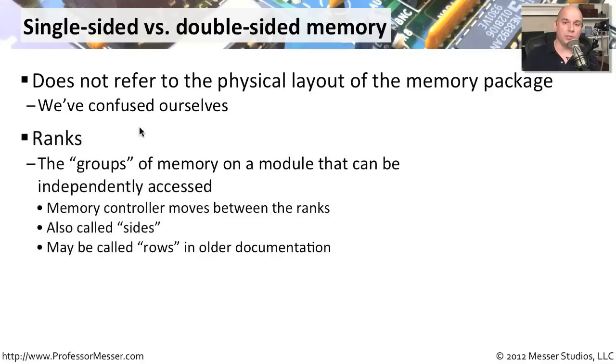The memory modules, the memory chips on the module itself, are arranged into groups. Sometimes there is a single rank accessed by the memory controller. Sometimes the memory controller can access multiple ranks on a particular memory module. When there are two ranks on a memory module, it's called double-sided. If there's only one rank, it's single-sided. In documentation, it may be called rows, sides, or ranks, but it's all referring to whether it's single-sided or double-sided.